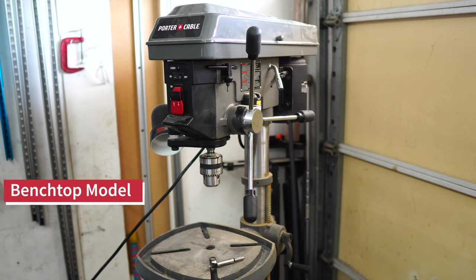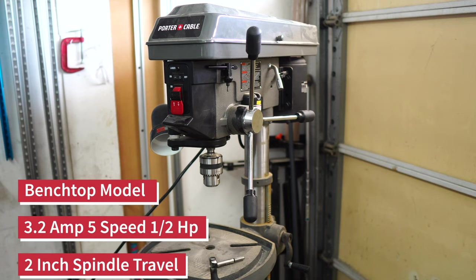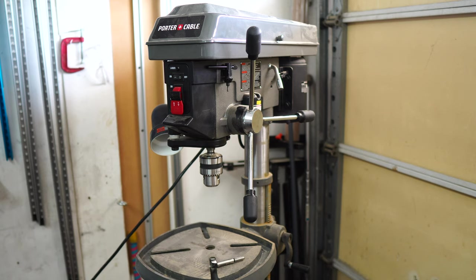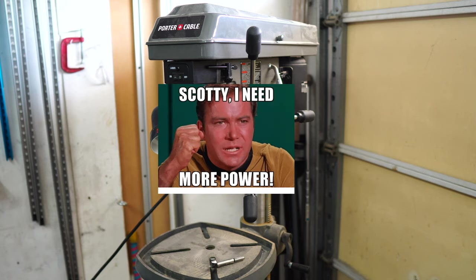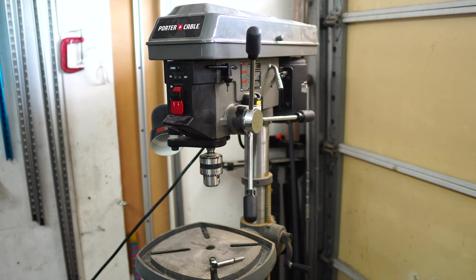The benchtop model is a 1.5-horsepower model with 2-inch travel, 3.2-amp, and 5-speed. So this model generally has a lot more power and a lot more capability, and overall, it's a bigger, bulkier unit than the benchtop version.